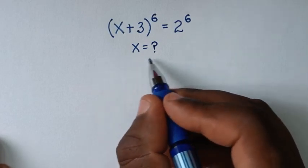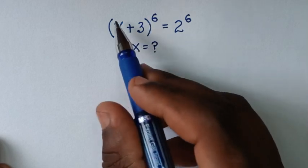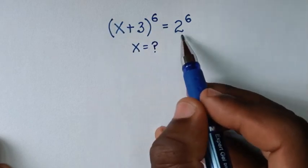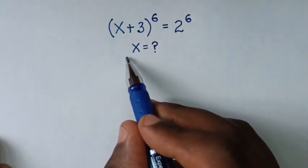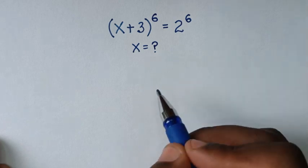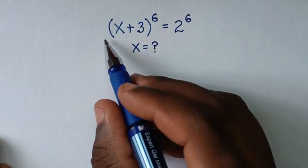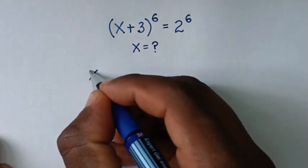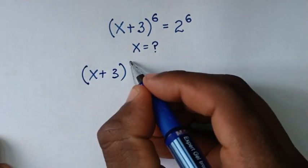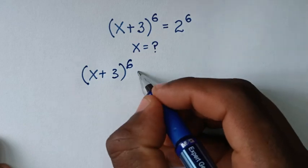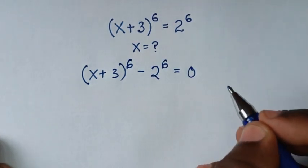Welcome. Solve this math problem: (x + 3)^6 = 2^6, to find the values of x. In the first step, we take 2^6 to the left side, so it becomes (x + 3)^6 minus 2^6 is equal to 0.